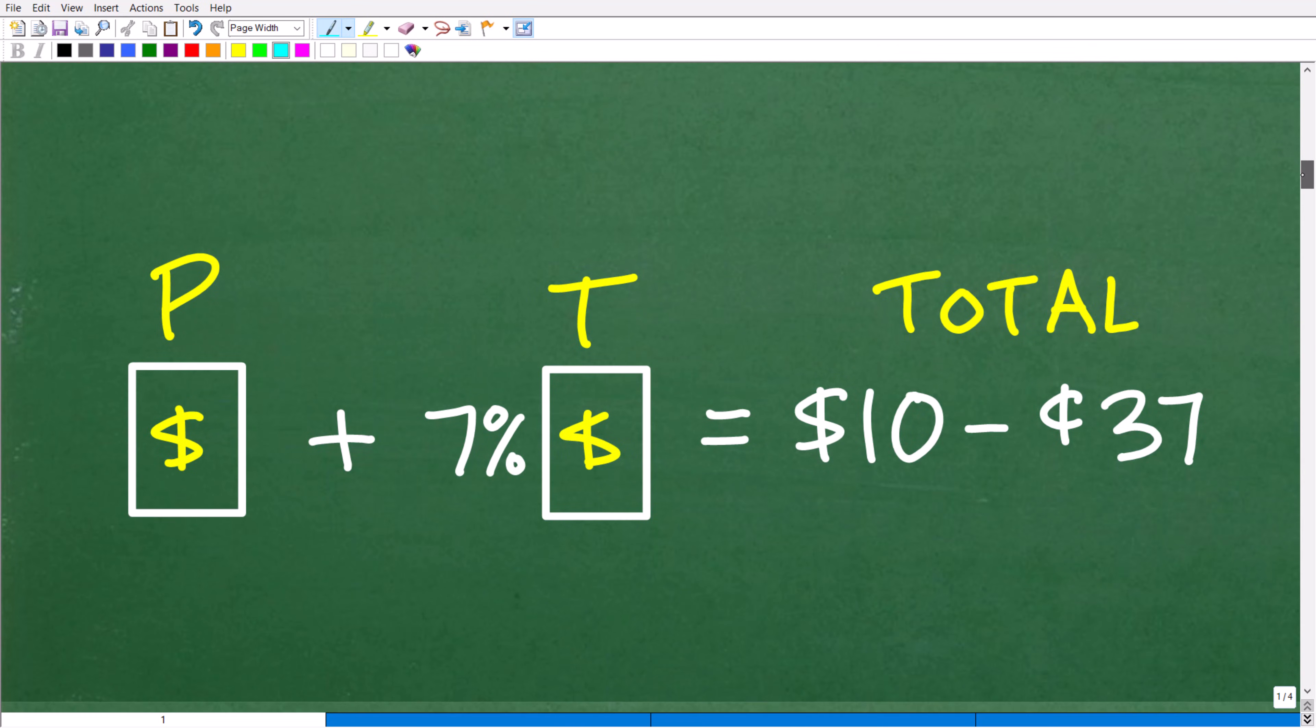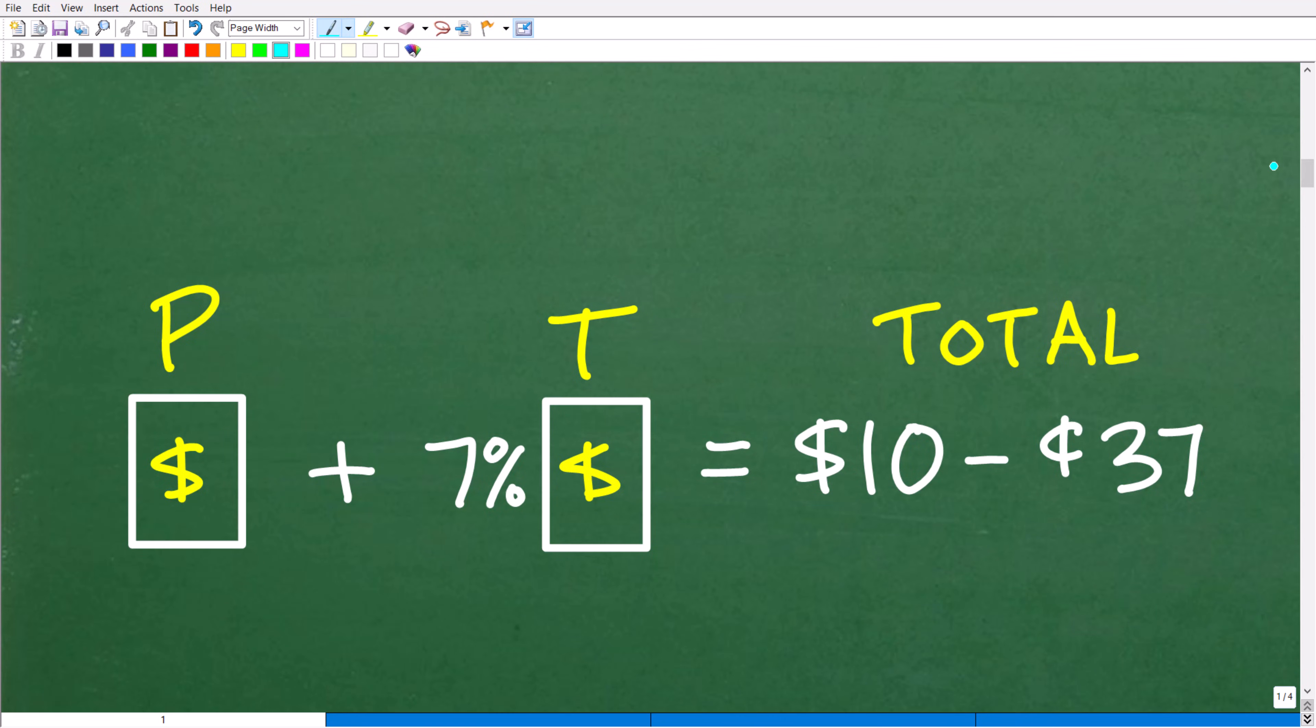Now, your model doesn't have to be like this, but you should have some sort of conceptual model that's kind of like this, right? All right, so here we have a product. We don't know how much it costs, but we know we have to pay 7% tax on it.